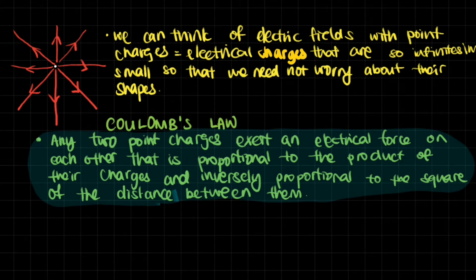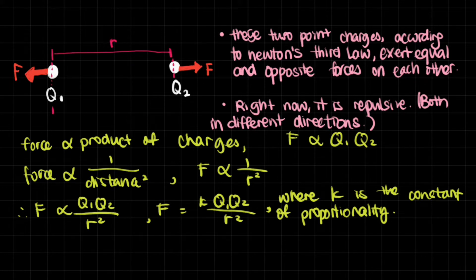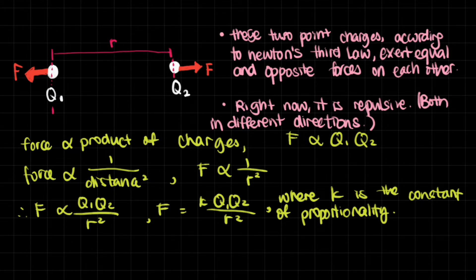Now let's look at Coulomb's Law. You might have heard of gravitational forces, and actually Coulomb's Law is extremely similar. Coulomb's Law tells us that any two point charges exert an electrical force on each other that is proportional to the product of their charges and inversely proportional to the square of the distance between them. So we multiply their charges together, and the force is inversely proportional to the distance squared.